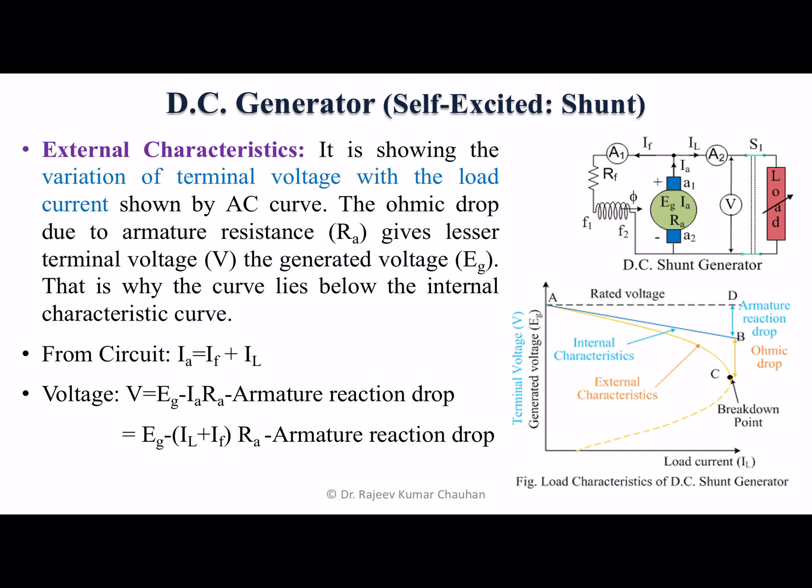External characteristics: it is showing the variation of terminal voltage with the load current as shown by AC curve. The ohmic drop due to armature resistance gives lesser terminal voltage than generated voltage Eg. That is why the curve lies below the internal characteristics curve.